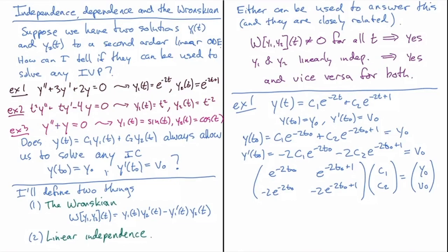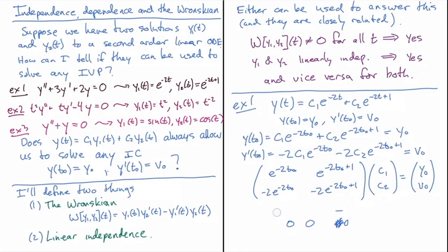If the matrix is not invertible, we have a problem. When we row reduce the augmented matrix, we may end up with an inconsistent row, meaning we can't solve for all initial conditions y₀ and v₀. So let's check the determinant — that will tell us if the matrix is invertible or not.